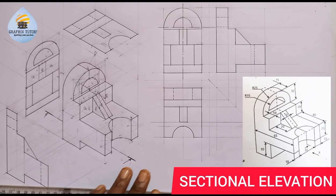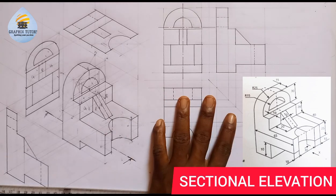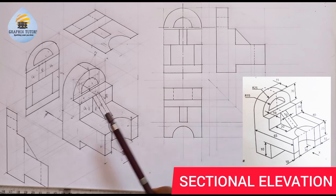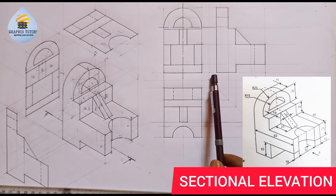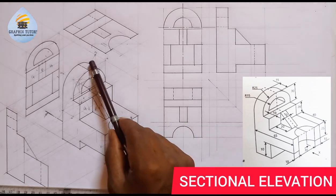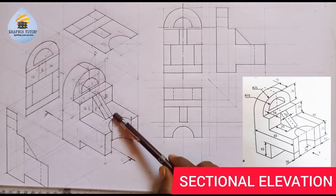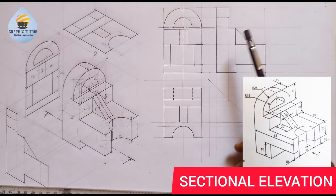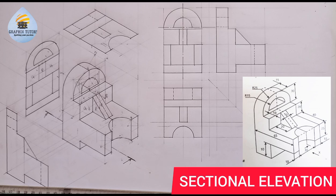If you're interested in how to construct this in both isometric and orthographic projection, you can click on the link at the top right corner of the screen. Similarly, if you want to know how to draw this in isometric projection, you can also click on the link at the top right corner, or check the description box or comment section to get the links for both isometric and orthographic.